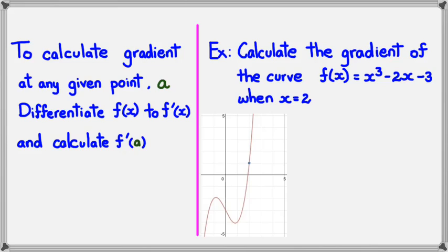There we go. The blue point on that graph is where we're trying to figure out what the gradient is. So what we have is f(x), which is x³ - 2x - 3. We could work out f'(x), differentiate it. So we'll get 3x² - 2.